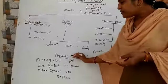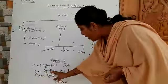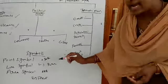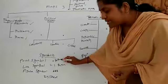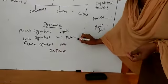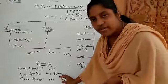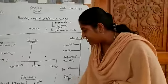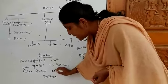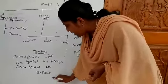Next one is the symbols. Can you see here — point symbol. We can identify the places using point symbol. And the next one is the line symbol. Using line symbol, we can identify the river. And area symbols are also there. Area symbol — for example, forest.